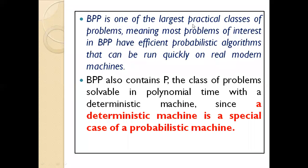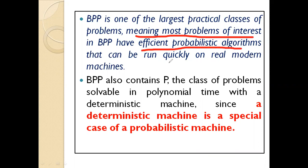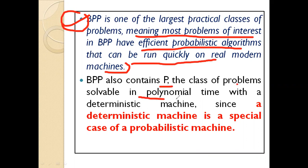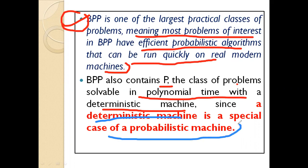BPP is one of the largest practical classes of problems, meaning most problems of interest in BPP have efficient probabilistic algorithms that we can run quickly on modern machines. Most of our current practical problems belong to BPP. BPP also contains P — the class of problems solvable in polynomial time with a deterministic machine — and a deterministic machine is nothing but a special case of a probabilistic machine.